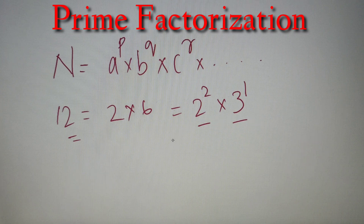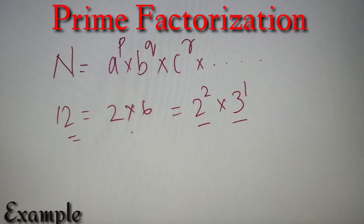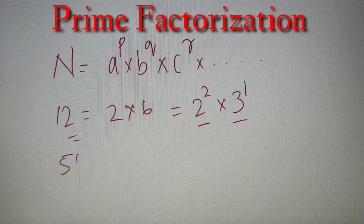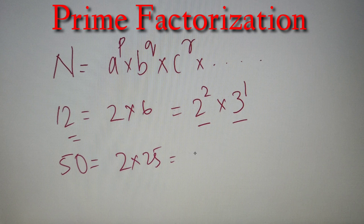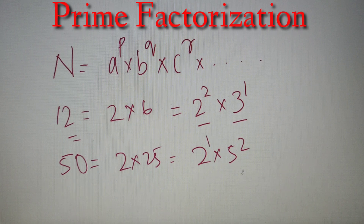There are different methods to prime factorize a number, and I have made a separate video on that topic which you can check out. For another example, let's prime factorize 50. Now 50 = 2 × 25, and 25 = 5², so we can write it as 2 × 5². Thus the prime factorization of 50 is 2¹ × 5².